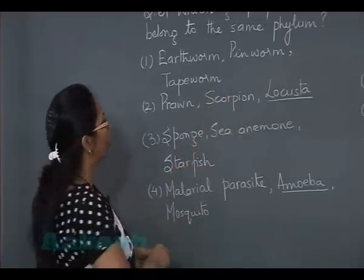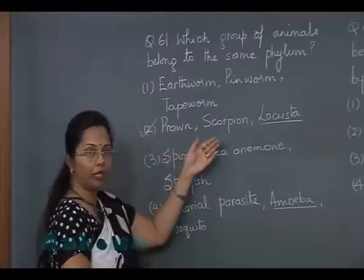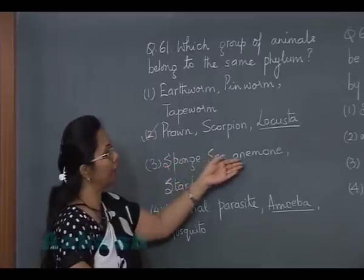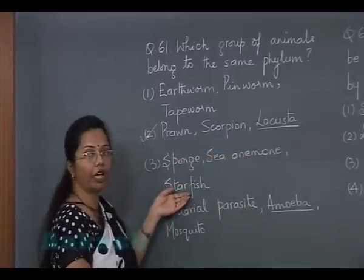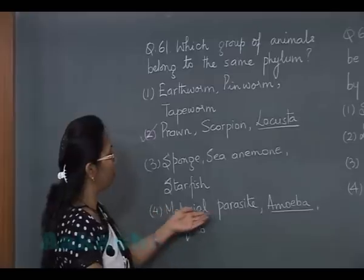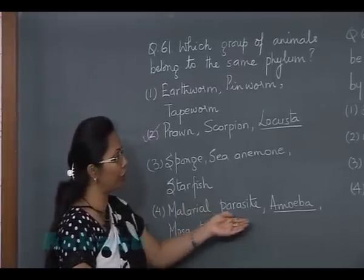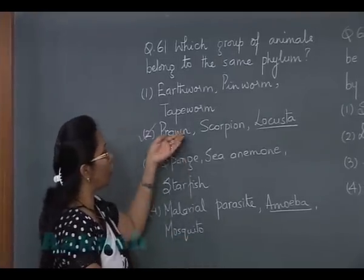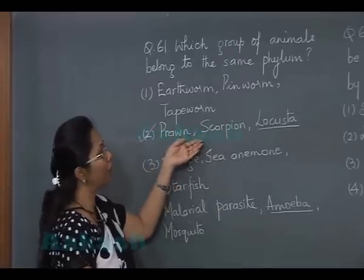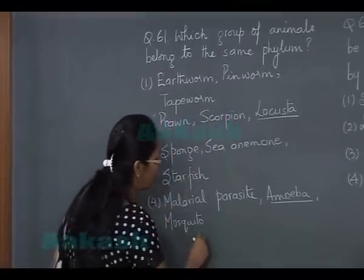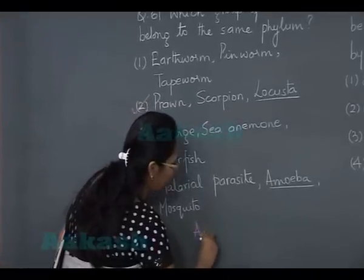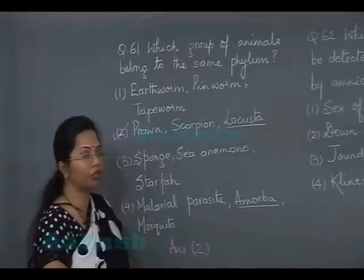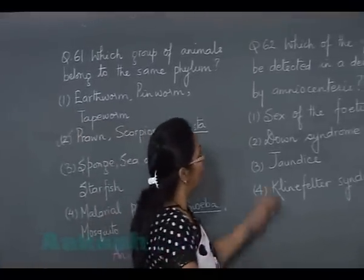So option two is the answer. The third option has sponges (Porifera), sea anemone (Cnidaria), and starfish (Echinodermata) — different phyla. The fourth option has malarial parasite Plasmodium (Protozoa), Amoeba (Protozoa), and mosquito (Arthropoda). The only choice where all three animals are from the same phylum is option two, making it our answer.